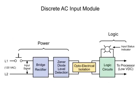Starting with the AC discrete input module, the circuit is comprised of two sections. The first section is referred to as the power section, and the second is called the logic section.